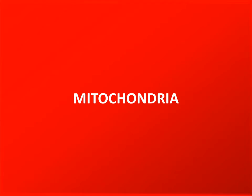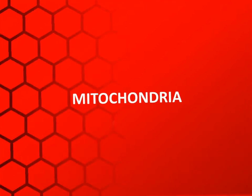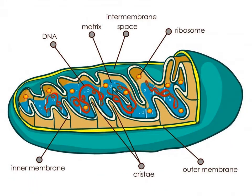Now we will learn about mitochondria, which is the most important organelle of the cell. This is a diagram of mitochondria. Here we can see the DNA matrix, intermembrane space, ribosome, inner membrane, cristae, and outer membrane. This is a complete diagram of mitochondria.